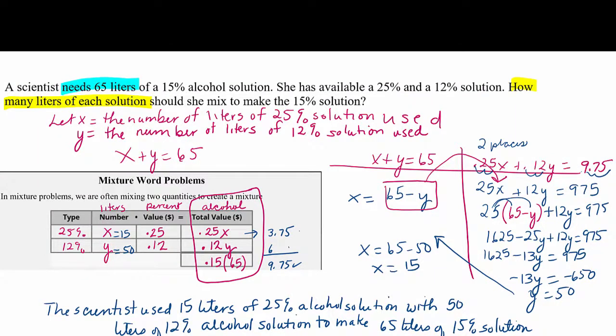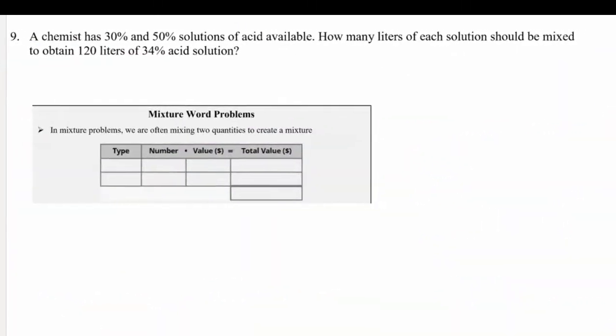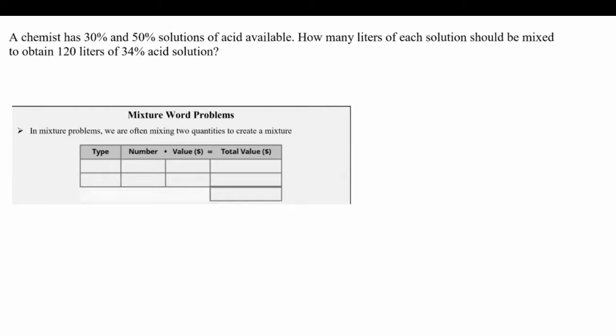Whether you used substitution or elimination you should have gotten the same two answers. Now you have one more to try — this time I want you to pause the video early and come up with the two equations and the solution yourself. A chemist has 30% and 50% solutions of acid available. How many liters of each should be mixed to obtain 120 liters of 34% acid solution?